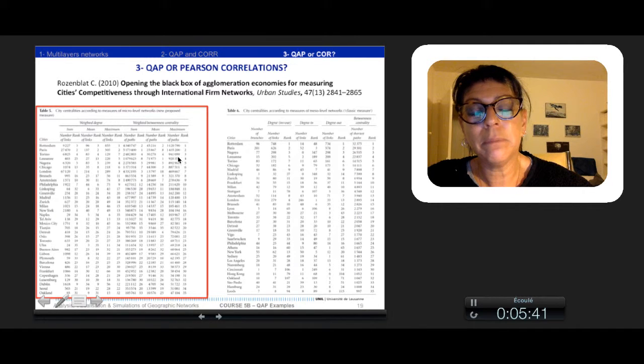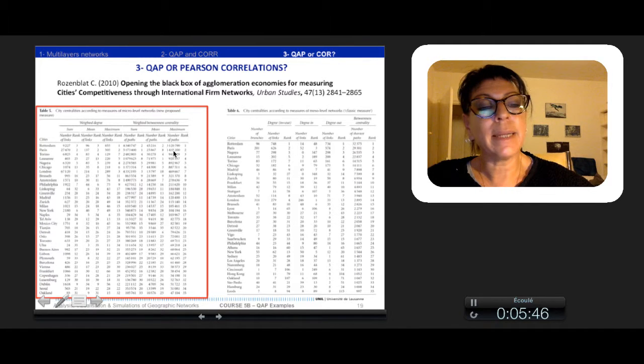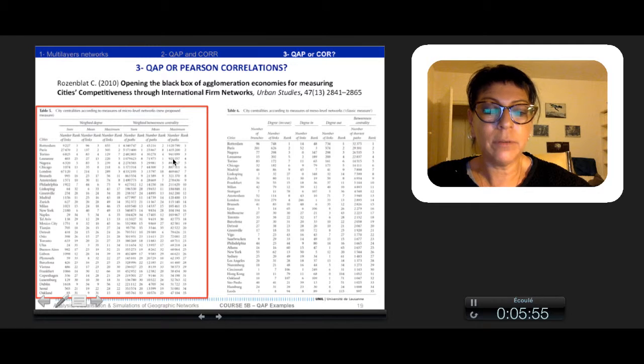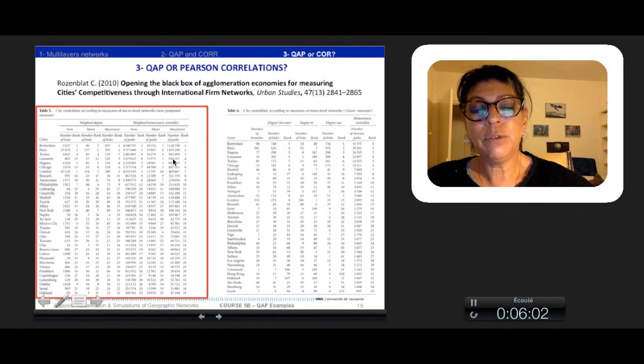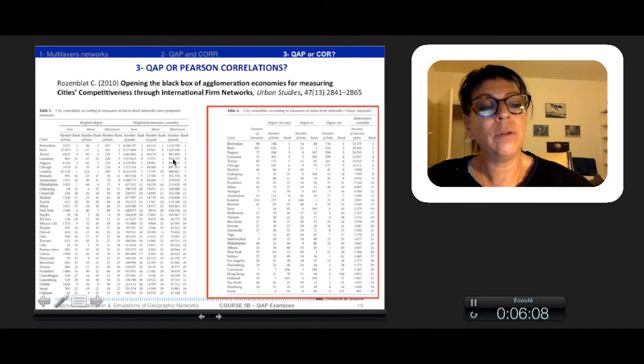The discussion led to choose the maximum weighted betweenness centrality, which indicates a city has at least one very central firm in the whole network of cities, supported eventually by other firms inside the city or firms in its own group network. Then we compared this result implemented at the micro level to the one more classically calculated on the linkages aggregated at the mesolevel by city, here at right.